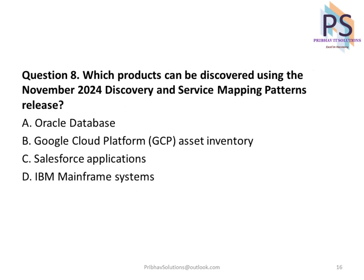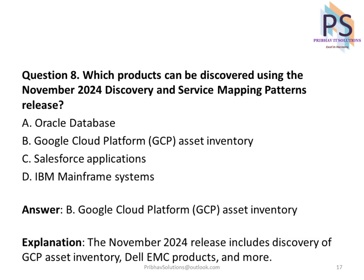Question 8: Which products can be discovered using the November 2024 Discovery and Service Mapping Patterns release? A. Oracle Database. B. Google Cloud Platform GCP Asset Inventory. C. Salesforce Applications. D. IBM Mainframe Systems. Answer: B. Google Cloud Platform GCP Asset Inventory.